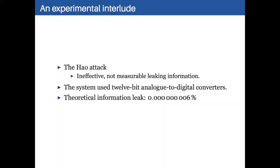The Hao attack, using temperature errors, or voltage errors essentially, in those terminals, is also ineffective. It didn't leak any measurable information. So they used 12-bit analogue to digital converters in the system. So they were able to keep that temperature reasonably accurate. Now the theoretical information leak in this case is, I'm not going to say what that number is. I'm pretty sure it's 10 to the negative 11. But it's not enough that you're going to lose much security over it.